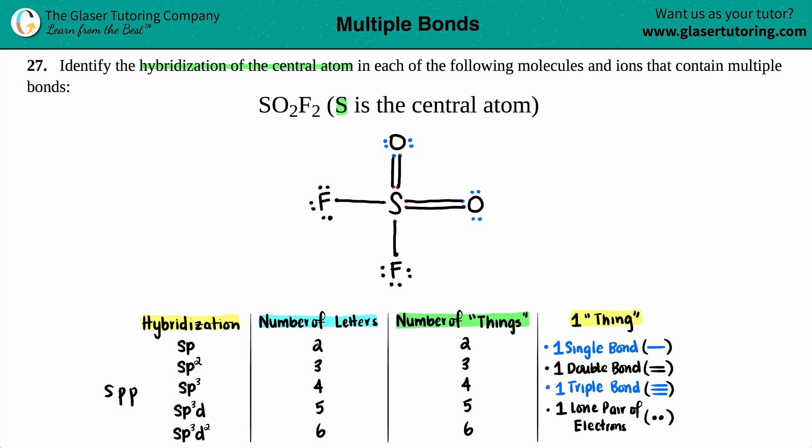And if I strip away one p, I'm now at sp2, and that has a total of three letters. If I strip another one away, that's sp, that only has two letters. And the number of letters corresponds with the number of things. Two letters, two things, three letters, three things. And just know what one thing is classified as.